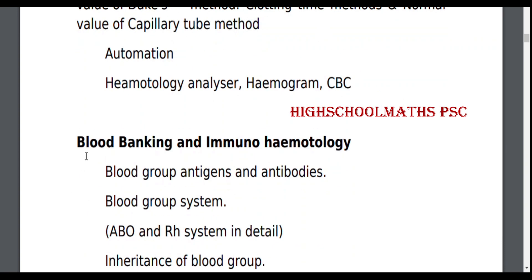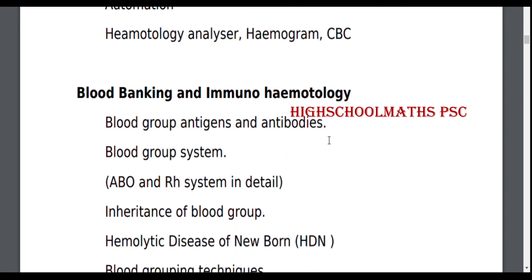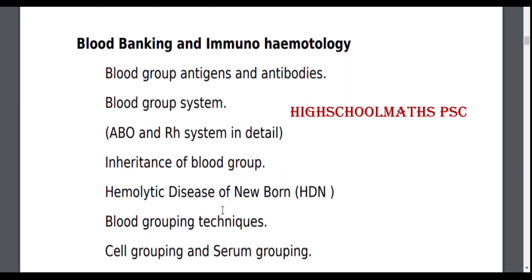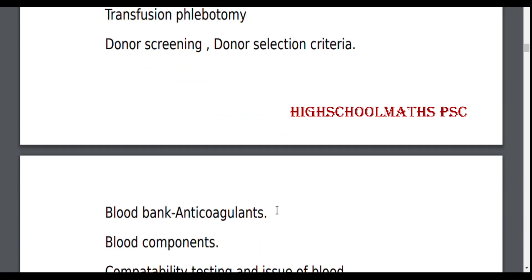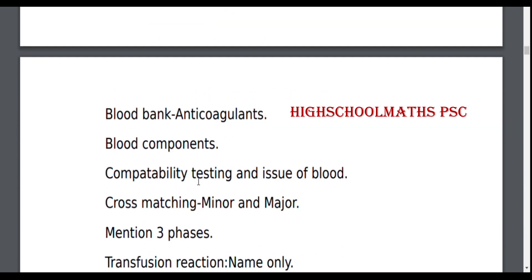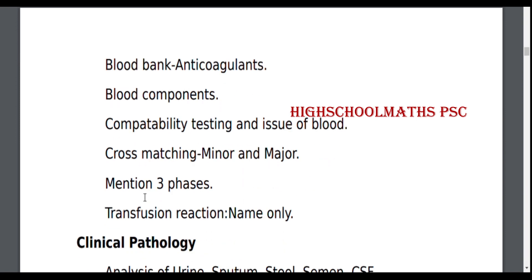Part 1 is an added topic: Blood Banking and Immunohematology. Blood Group Antigens and Antibodies, Blood Group System, ABO and Rh System in detail, Inheritance of Blood Group, Hemolytic Disease of Newborn (HDN), Blood Grouping Techniques — Cell Grouping and Serum Grouping, Slide and Tube Method. Transfusion, Phlebotomy, Donor Screening, Donor Selection Criteria, Blood Bank Anticoagulants, Blood Components, Compatibility Testing and Issue of Blood, Cross-Matching Minor and Major — mentioned 3 phases, Transfusion Reaction.